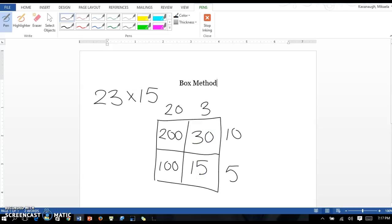So once we do that we have these four numbers and our next step is that we're going to add them together. So we'll take 200 plus 100 plus 30 plus 15 and we're going to add those up to get 345.